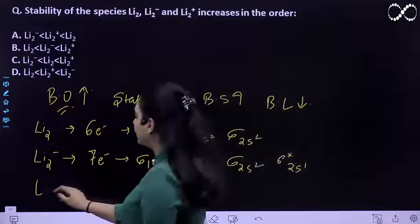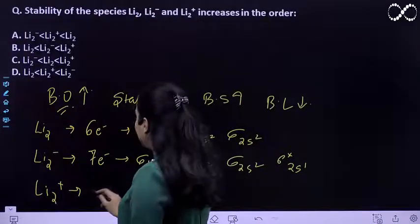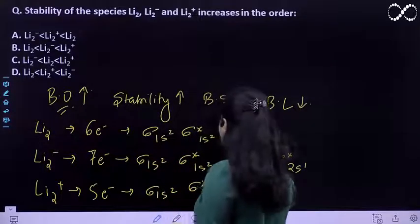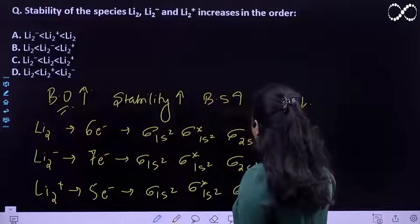If we talk about Li₂⁺, it will have 5 electrons. It will be σ1s², σ*1s², σ2s¹.